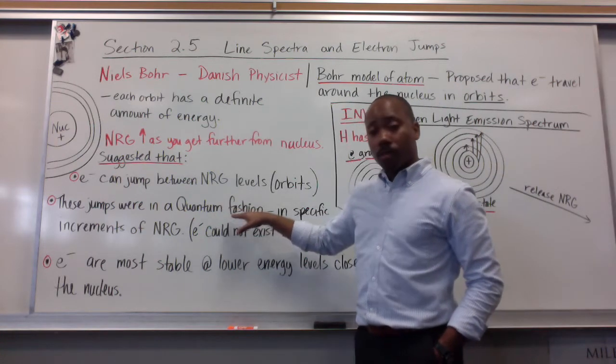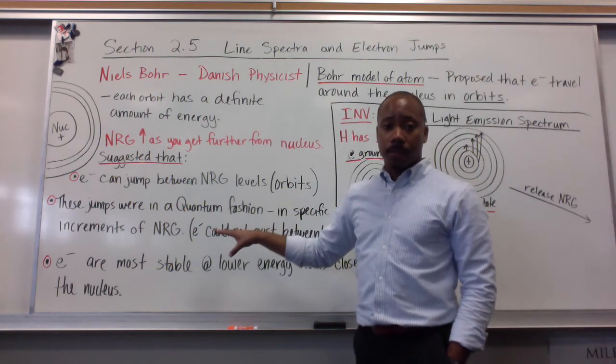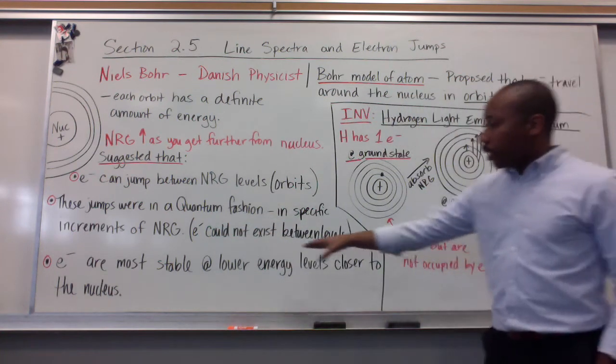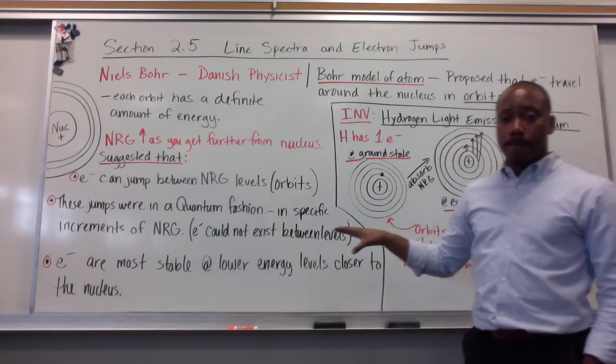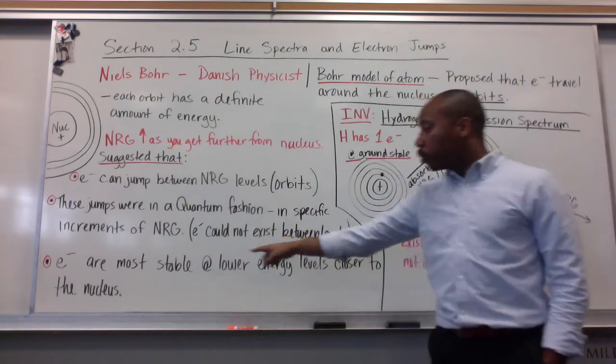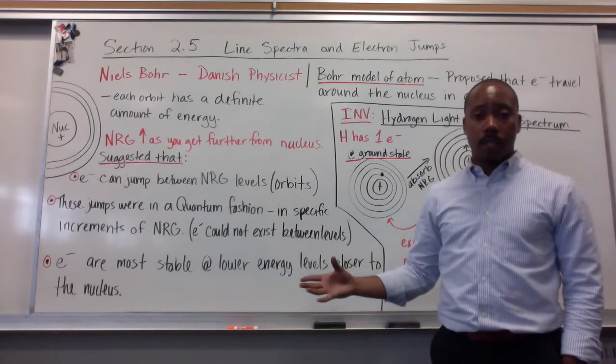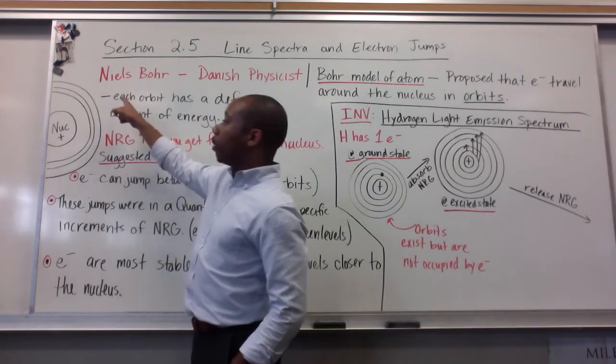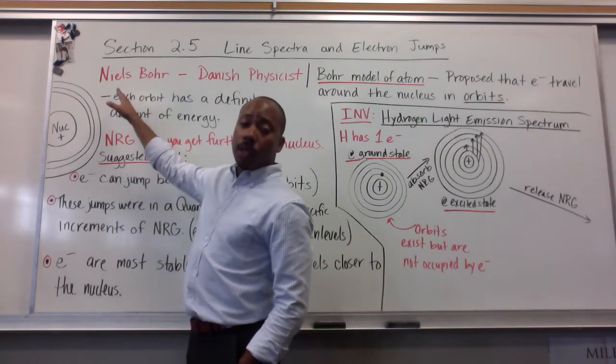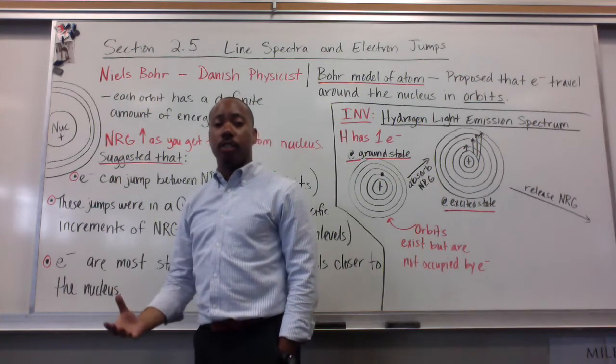Quantum fashion. Niels Bohr was the godfather of quantum physics. Electrons cannot exist between levels, just said that, but I want to reiterate that. Electrons are most stable at lower energy levels, closer to the nucleus. This is another thing suggested by Niels Bohr, that when electrons went to higher energy levels, they were unstable. They had to come back down to a lower energy level or a lower energy state. And we've seen that before.